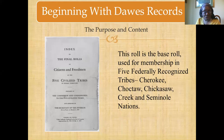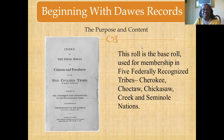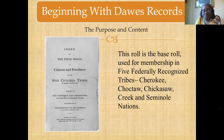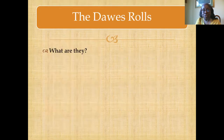You hear a lot about the Dawes records or the Dawes Roll. This roll is actually the base roll — the base roll used for membership in five federally recognized tribes: Cherokee, Choctaw, Chickasaw, Creek, and Seminole nations. These rolls were created from each of the tribes and have left a plethora of information that you can use to get started with your research.